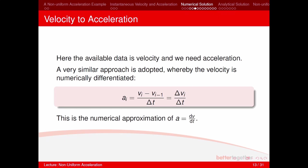For converting velocity to acceleration, a very similar approach is used: the acceleration at time step i is a_i = (v_i − v_{i−1}) / Δt, also written as Δv_i / Δt. This is the numerical approximation of a = dv/dt.